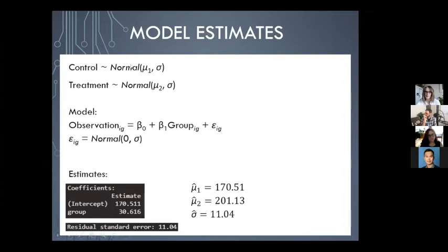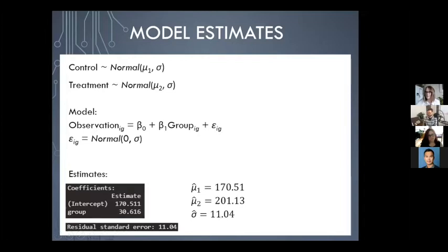If we fit this linear model in R using height as the outcome and group as the predictor, the summary gives us coefficients: the intercept is estimated at about 170 cm and the group effect at about 30 cm. The intercept is the mean of the control group, the group effect is the difference between the two group means, and the residual standard error is sigma — the same for both groups. These map directly onto the population-level statements we made earlier.